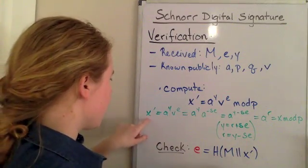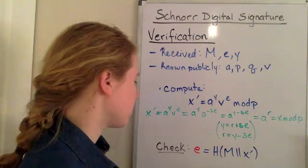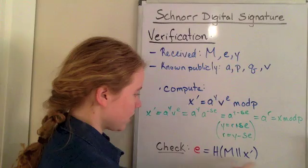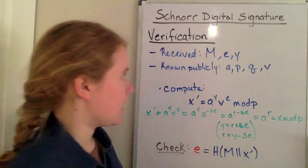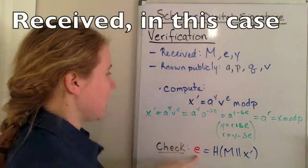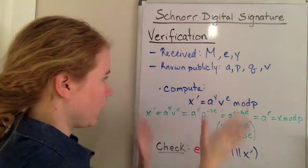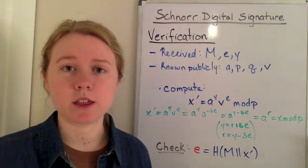x prime that we have computed right here. So if we do this computation and we find that the e value that we calculate is the same as what we send, we know that the whole thing winds up and it is a valid signature.